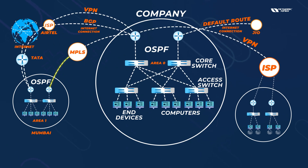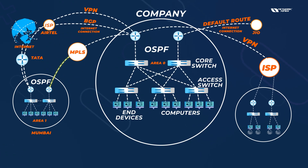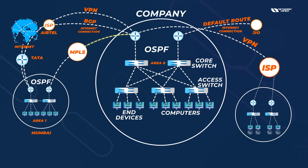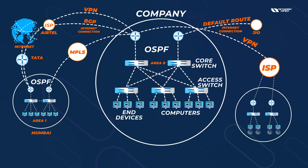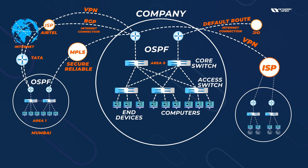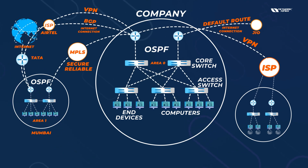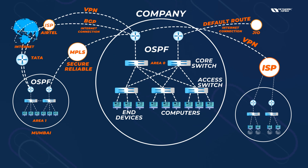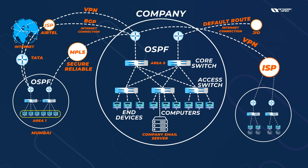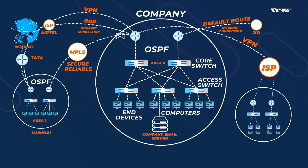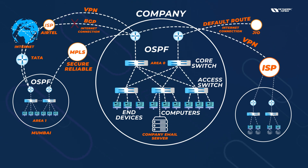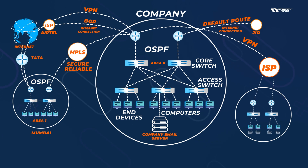Another option is MPLS link, which is a private connection — very costly. MPLS is a dedicated connection, not internet, so your router connects the head office and branch office securely. Internet is not secure, that's why companies use MPLS or similar technologies for secure transfer and better reliability. For example, if you have a powerful email server at the head office and you lose connection, you can't even send email — that's why companies prefer MPLS connectivity over the internet.